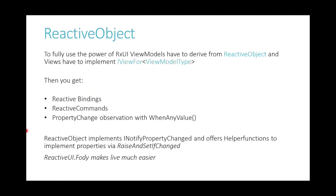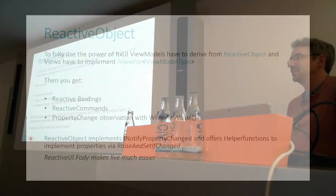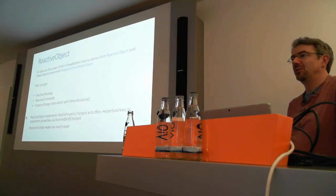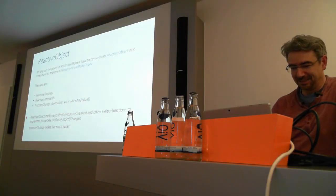ReactiveObject implements INotifyPropertyChanged, which is important for bindings to work, and has some helper functions for this. There is also the package ReactiveUI.Fody, which makes it almost automatic — you just add a [Reactive] attribute to the properties that should be monitored.